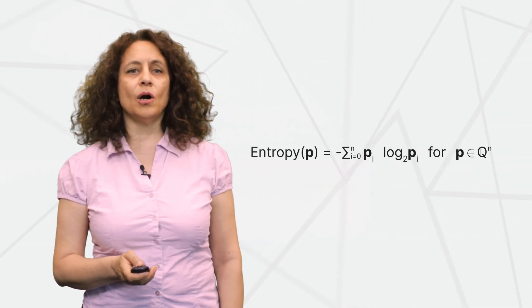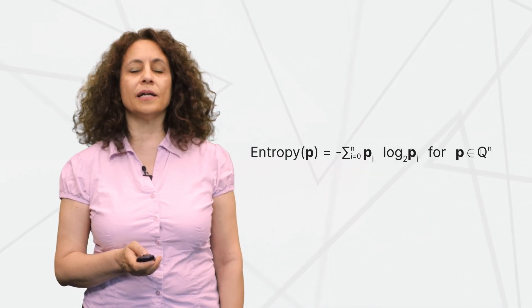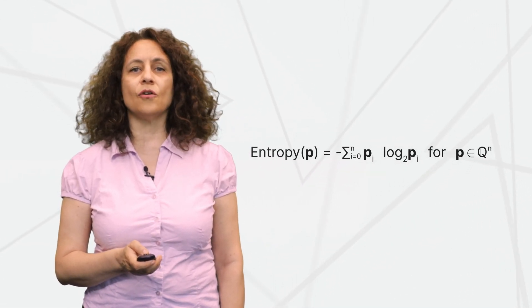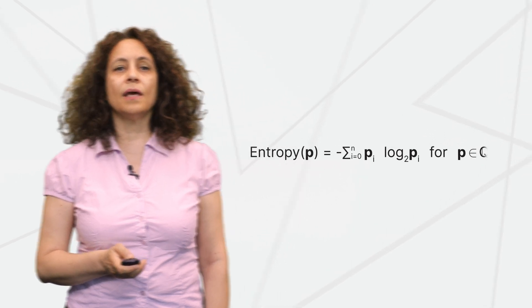Entropy is generically regarded as a measure of disorder in physics and as a measure of information in communications. Entropy is calculated as the sum of P log P, where P are the frequencies of the n possible states of a variable.